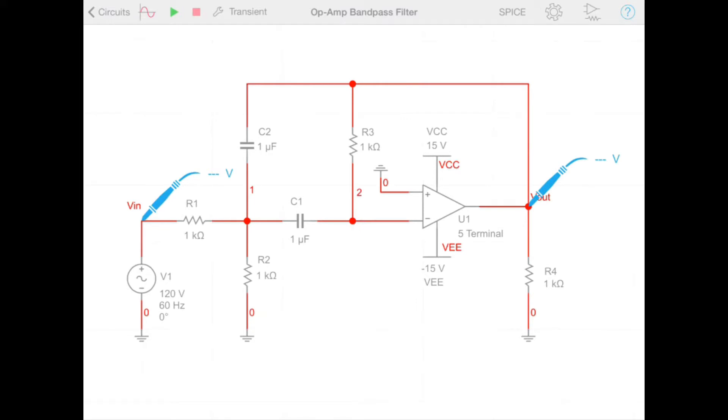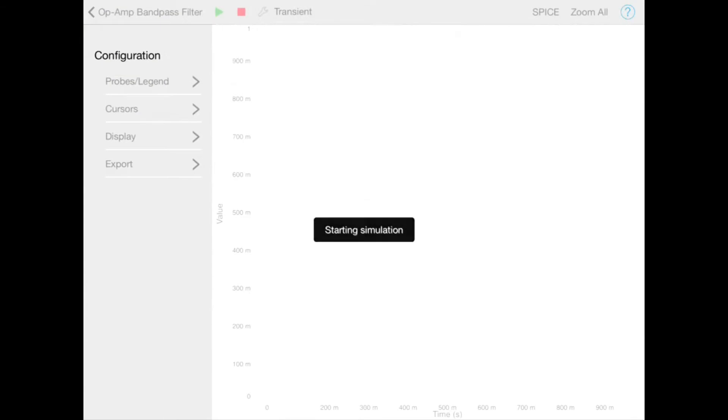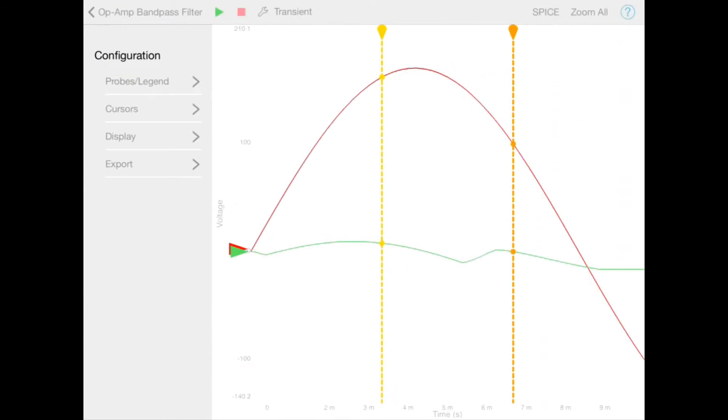The next two buttons are our start and stop simulation buttons. If we tap start, it will then run our pre-configured transient analysis. Return to the schematic by pressing the back button.